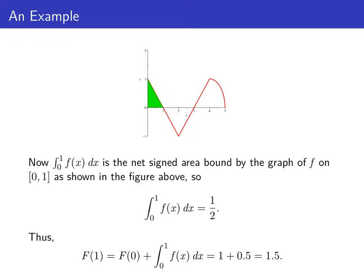We evaluate this definite integral from 0 to 1 by interpreting it as a net signed area. On the interval from 0 to 1, the graph of little f is above the x-axis, so the integral gives us the area of this green shaded triangle with height 1 and base 1, which is one half. That means big F of 1 equals big F of 0 — which we're assuming to be 1 — plus one half. So big F of 1 is 1 and a half.